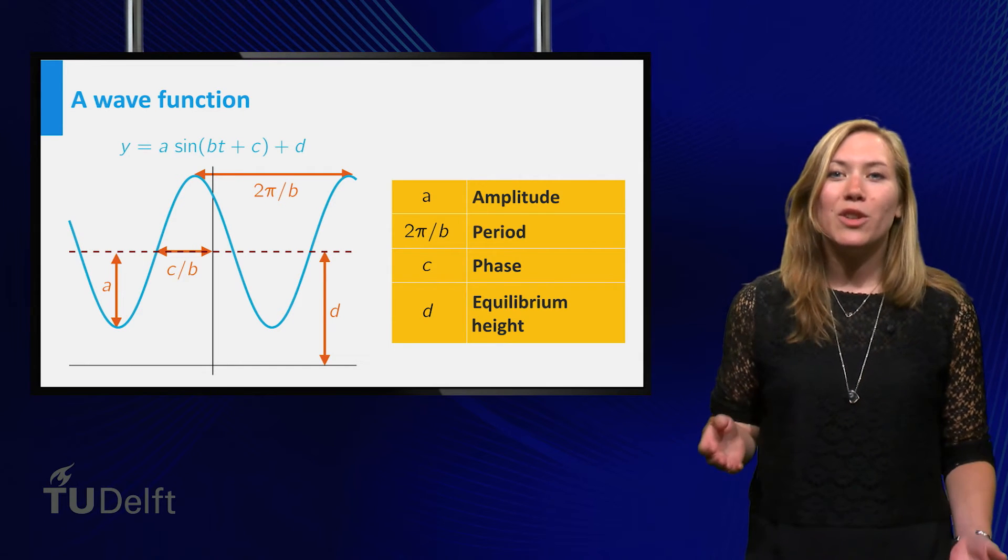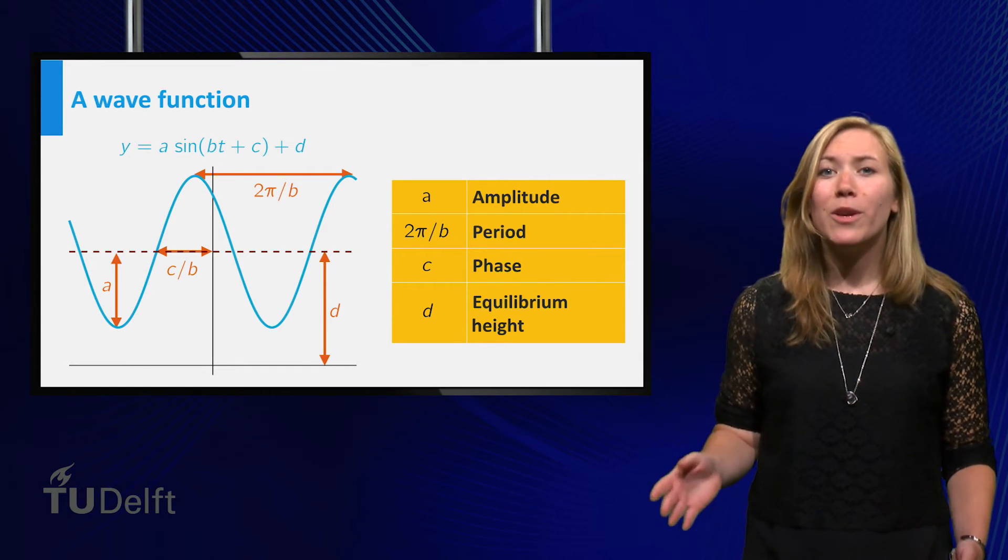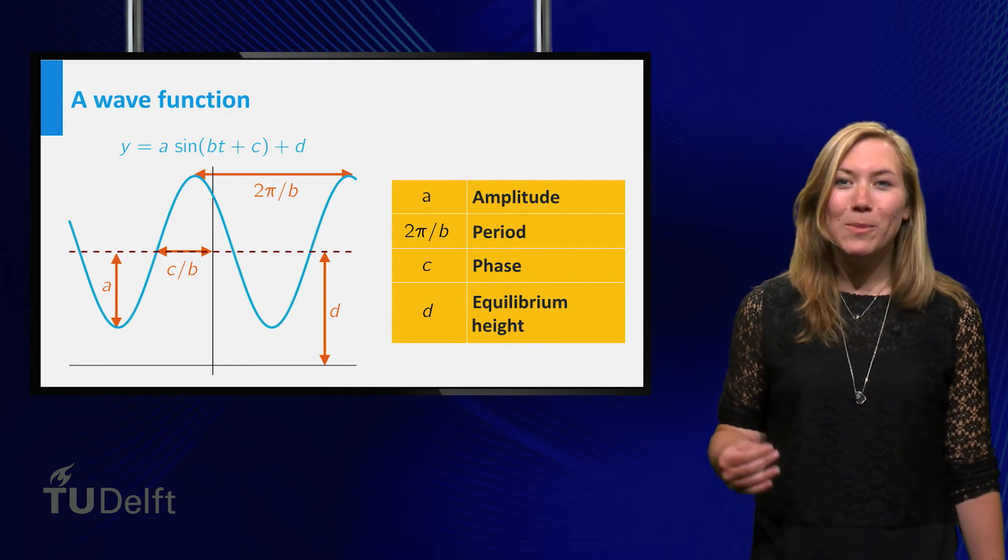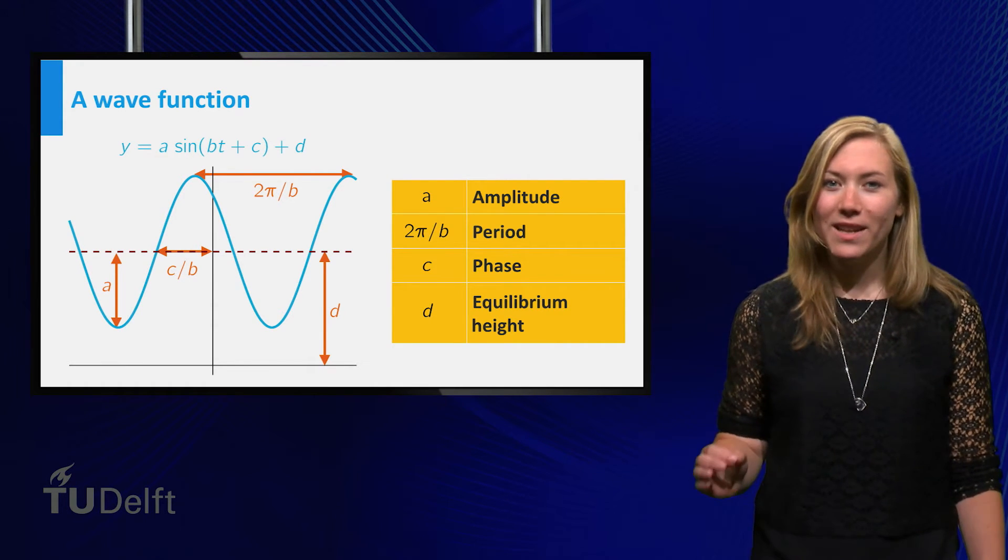The phase, which determines when the graph first passes through the equilibrium. And the equilibrium height, which is the average height of the function.